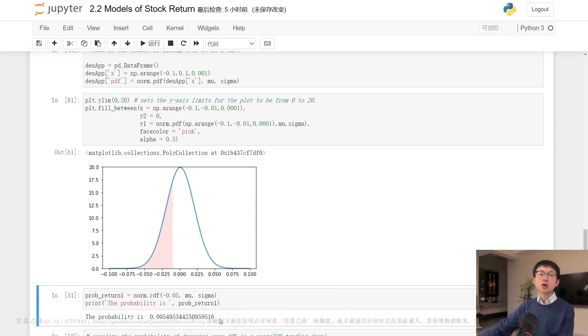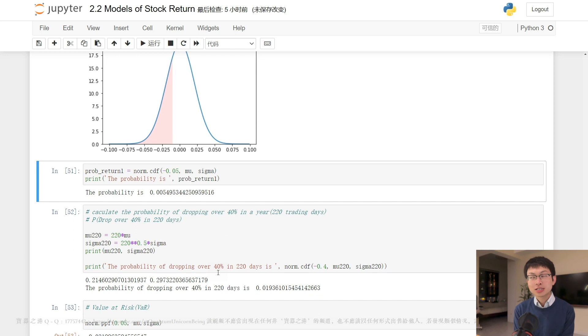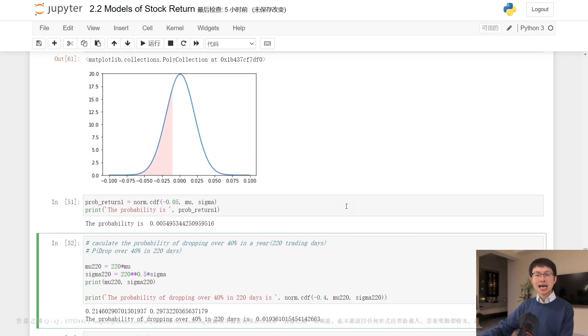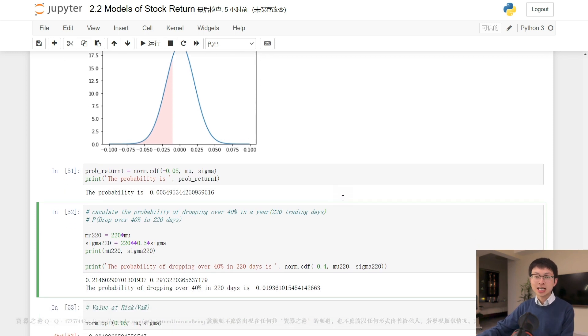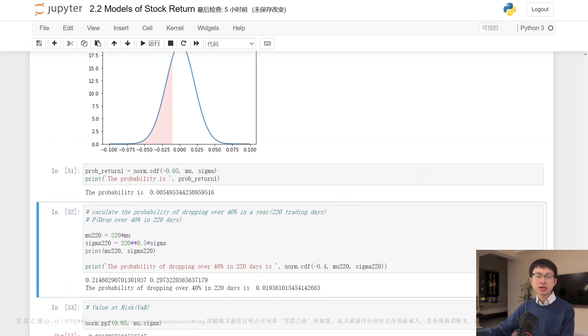Well, next we turn to the question of how likely it is that the stock price of Apple dropped by over 40% in one year, which comprises 220 trading days. To model the yearly return, we assume that the daily returns are independent, even though this is not strictly accurate. This simplifies the calculation of the mean and variance of the yearly return using formulas for the sum of variables.